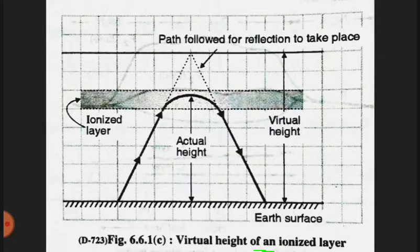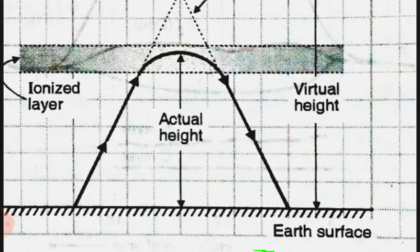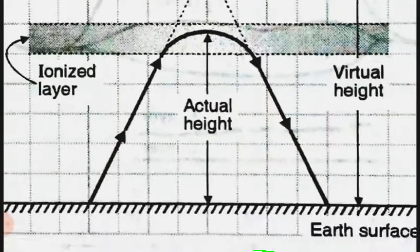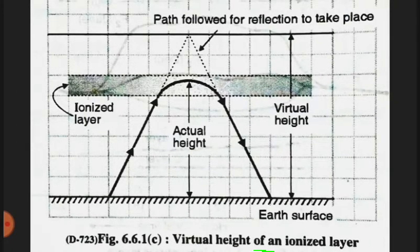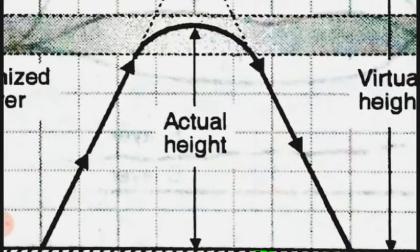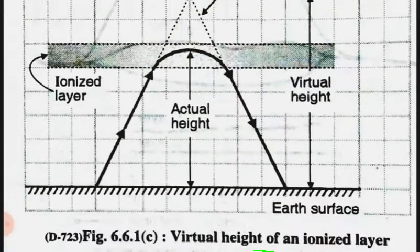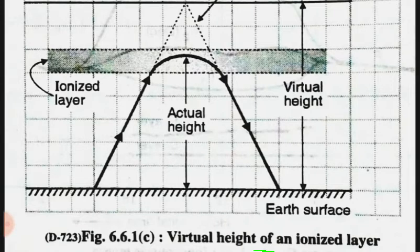In this process, the wave bends down gradually. The incident and reflected ray follow exactly the same path, as though the signal had been reflected from a surface located at a greater height.